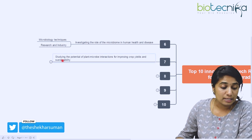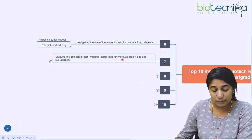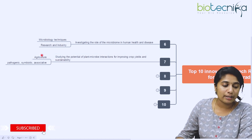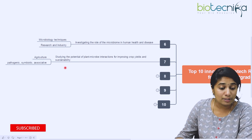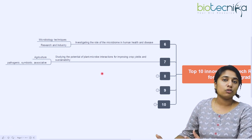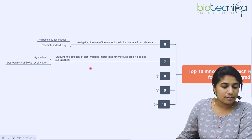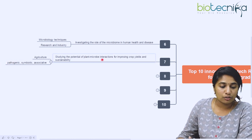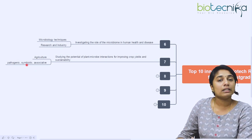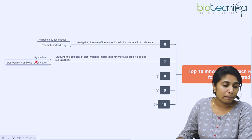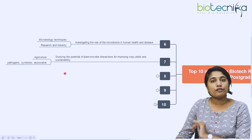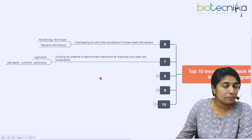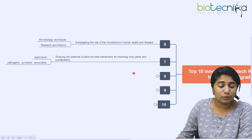The seventh topic is studying the potential of plant-microbe interaction for improving crop yield and sustainability. This is in the area of agriculture, plant biotechnology, or microbiology - it's a confluence of all these three fields. What is this plant-microbe interaction? It could be pathogenic like disease-causing interaction, or it could be symbiotic where it helps in increasing the yield or quality of crop yield, or it could be associative as well. These are different types of interactions between plant and microbe and how this affects crop yield and sustainability in agriculture.